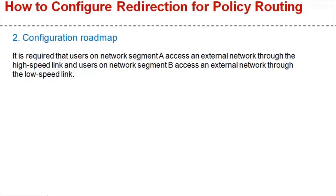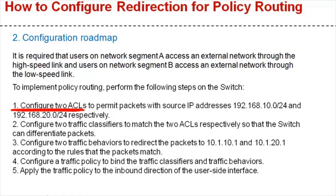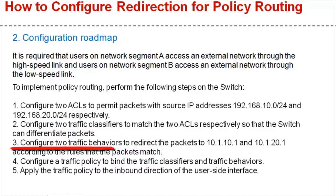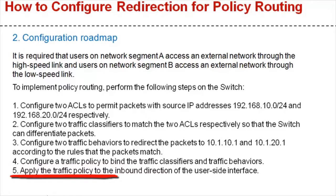To implement policy routing, perform the following configurations on the switch. 1. Configure two ACLs to permit packets with source IP addresses 192.168.10.0/24 and 192.168.20.0/24 respectively. 2. Configure two traffic classifiers to match the two ACLs so the switch can differentiate packets. 3. Configure two traffic behaviors to redirect packets to 10.1.10.1 and 10.1.20.1 according to the matched rules. 4. Configure a traffic policy to bind the traffic classifiers and traffic behaviors. 5. Apply the traffic policy to the inbound direction of the user-side interface.